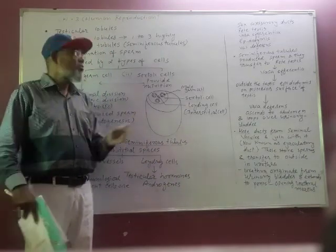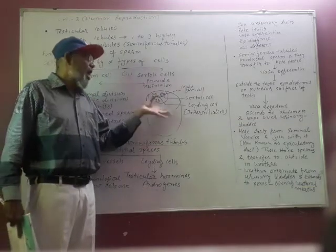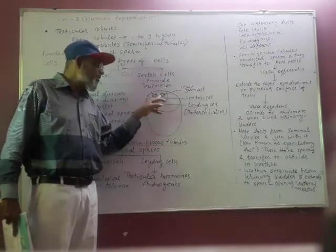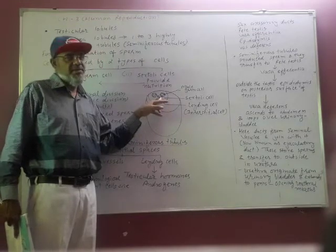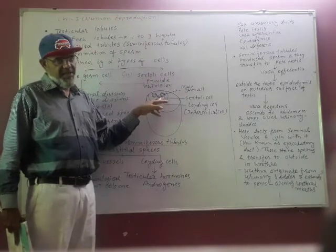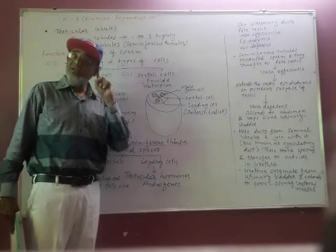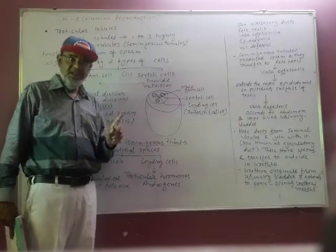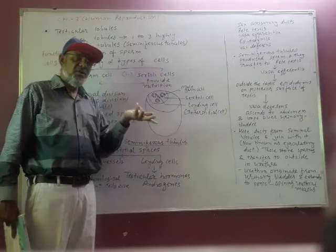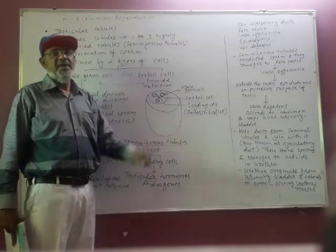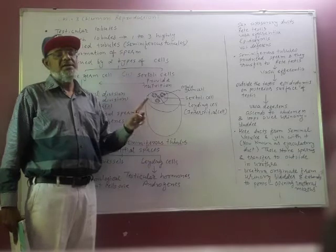So in each testis, the number of seminiferous tubules may range from 250 to 750. But when we consider one complete male body, there are two testes. Due to that, it will be somewhere 500 to 1500.